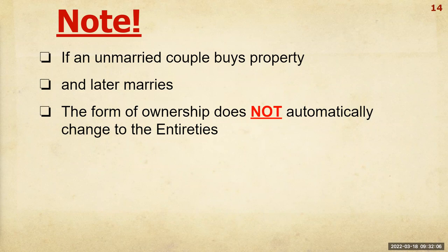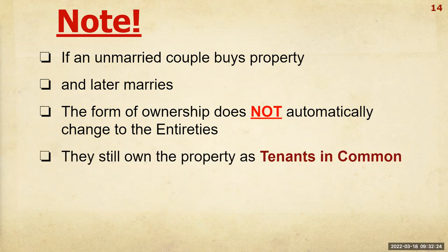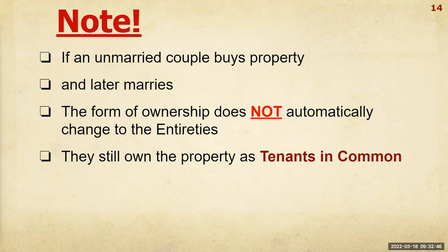So what if they bought the property unmarried and then got married? They don't have to sell it to each other — all they have to do is get an attorney to change the form of ownership, probably costing about $50. The easiest thing is to go to the attorney who closed the original purchase, since they already have the title work. The attorney draws up a document, records it at the register of deeds, and it changes the form of ownership to the entireties.